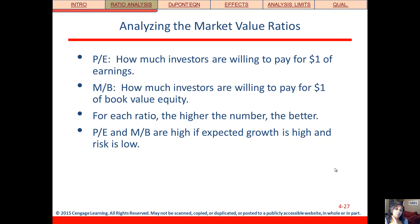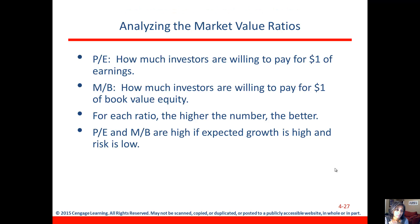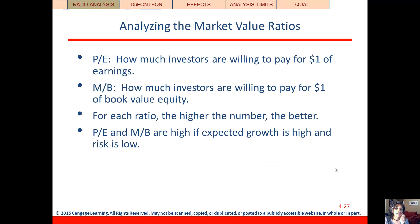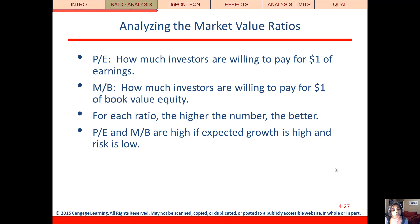PE tells us how much investors are willing to pay for a dollar of earnings — in this case, $12 for $1 of earnings. Similarly, market-to-book tells us how much investors are willing to pay for a dollar of book value equity — here they're willing to pay $1.60. For both of these, the higher the better from the firm's perspective. A higher PE means a higher stock price relative to earnings, and a higher market-to-book means a higher overall market value of the firm relative to its overall book value.